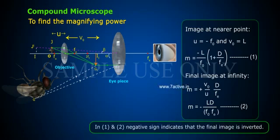In equations 1 and 2, negative sign indicates that the final image is inverted.